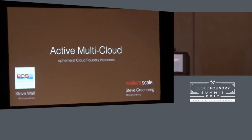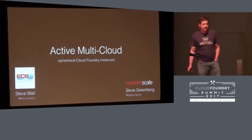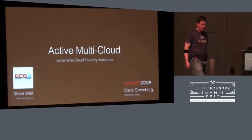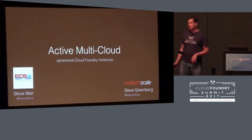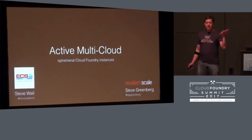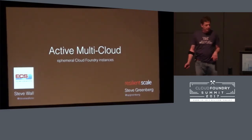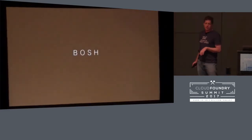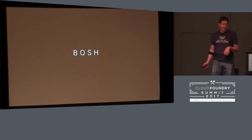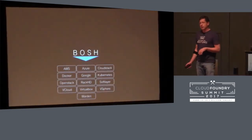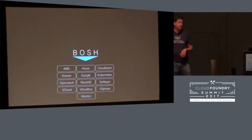There's been a lot of talk in the conference about multi-cloud — that's running Cloud Foundry on many different clouds. What we're going to be talking about here is active multi-cloud: running many instances of Cloud Foundry, and them all appearing as one. At the heart of multi-cloud is BOSH — BOSH is really the enabler. BOSH allows you to deploy Cloud Foundry to a variety of different IaaSs.